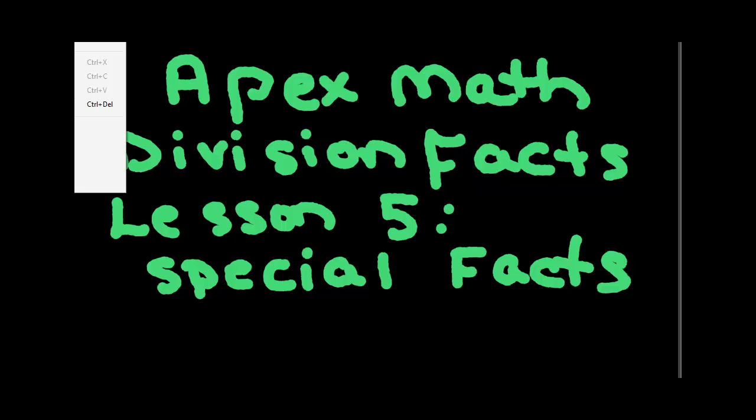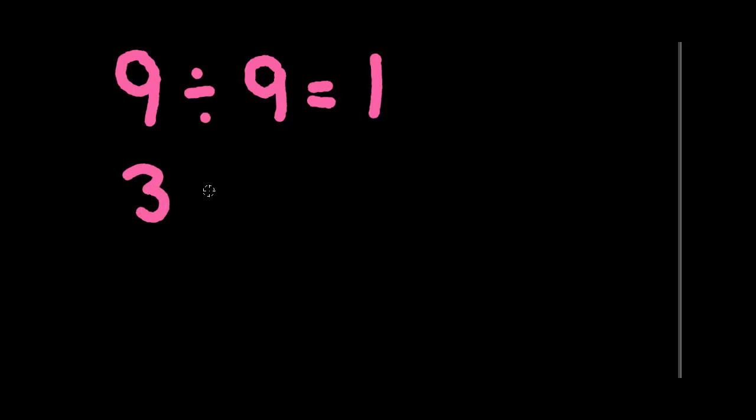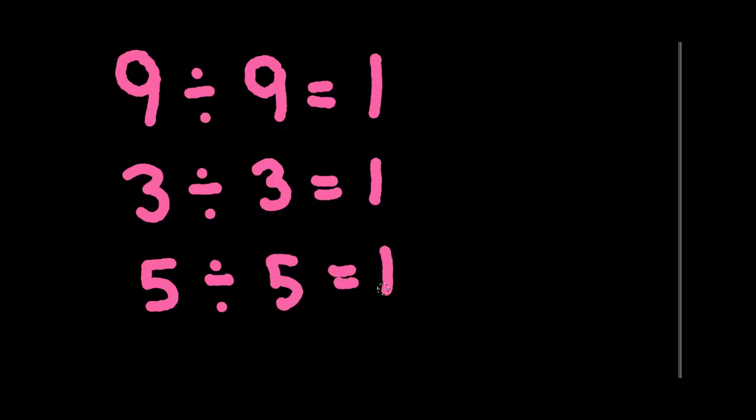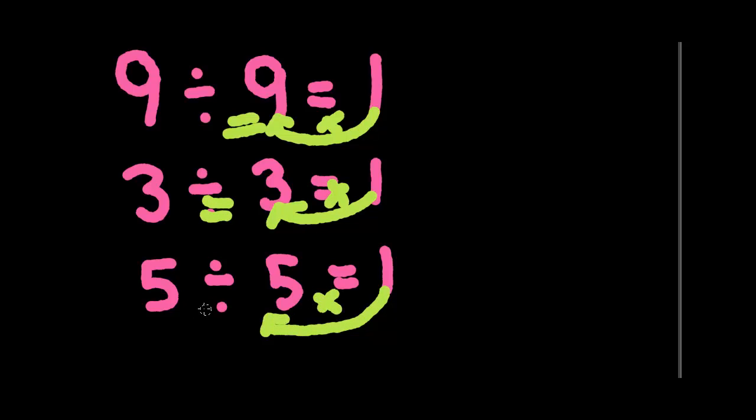Let's start with a pattern where we have a number divided by itself. Anytime we have a number divided by itself, the answer is always one. Remember that division works backwards from multiplication. We know one times nine equals nine, one times three equals three, and one times five equals five. You can see how this makes sense with the multiplication fact backwards.